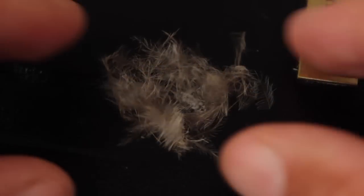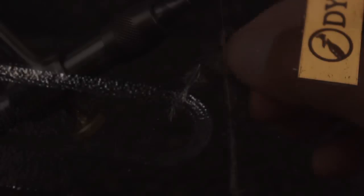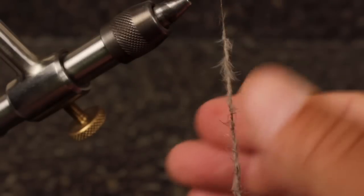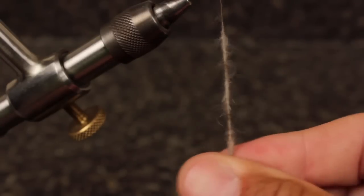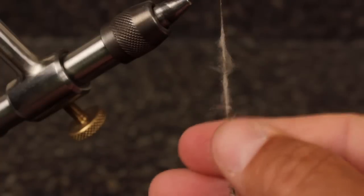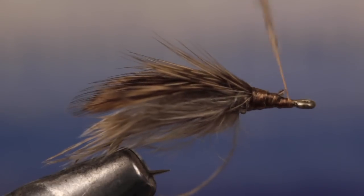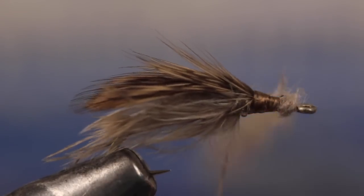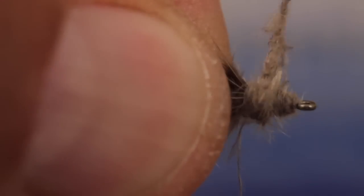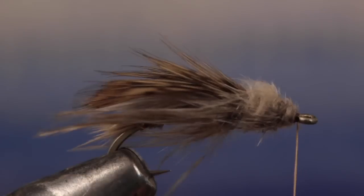Now corral the fluffies you set aside and use them to form a slim dubbing noodle on your tying thread that's about three inches long. You'll find it dubs quite well. Starting just behind the eye, wrap the dubbing noodle up the ramp to the base of the wing and then back down to form a rough cone shape.